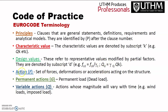For example, fcd = fck / gamma_c, and qd is the design value for variable action. Actions are denoted by 'F' — F stands for action, meaning a set of forces, deformations, or accelerations acting on the structure. Permanent actions are denoted by 'G', and variable actions are denoted by 'Q' — which is the live load such as wind load and imposed load.